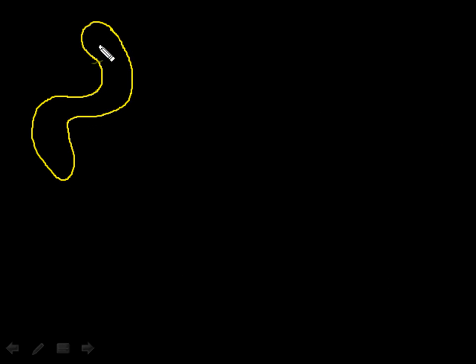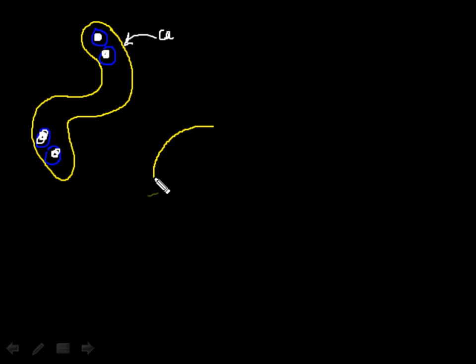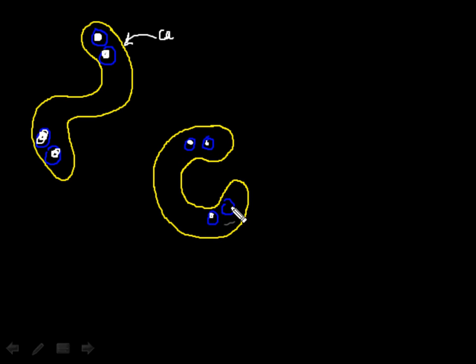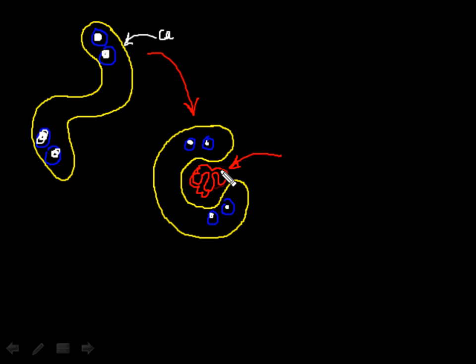Let's look at how the conformational changes appear. This is a dumbbell shaped calmodulin — these are the two high affinity calcium binding sites on the N terminal, and these are the two high affinity calcium binding sites on the C terminal. Binding of calcium brings about conformational changes in the structure of calmodulin, and because of these conformational changes the target protein is now firmly bound to calmodulin.